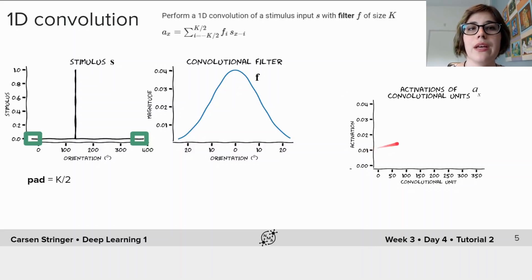So to compute a sub x we're going to slide this filter f along the stimulus s and compute the sum of the product at each of these points. So this results in these activations on the right, and I'll play it again so you can see it again.